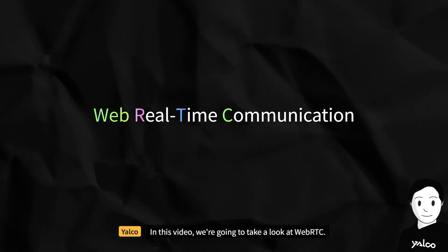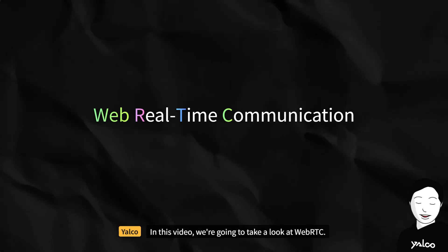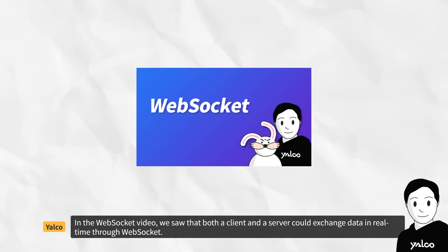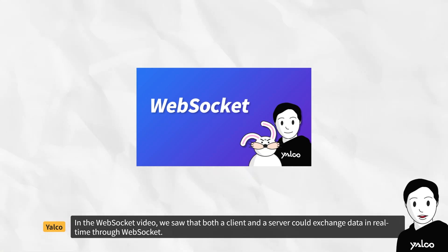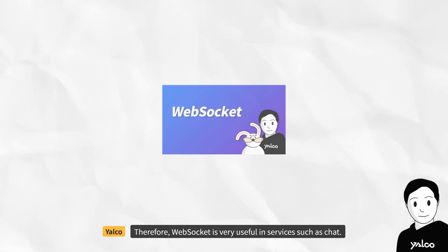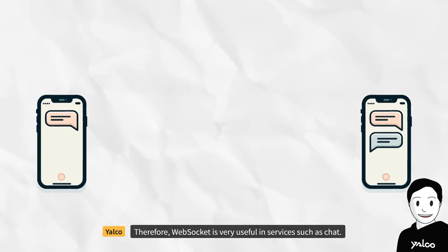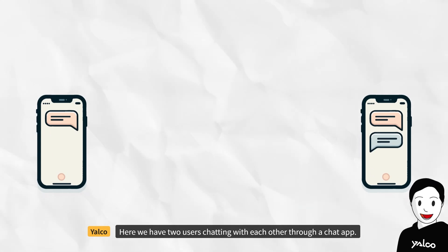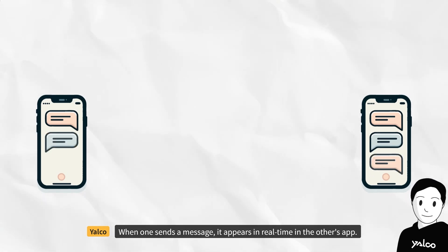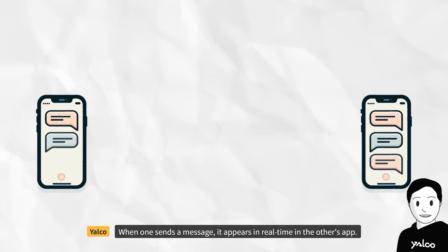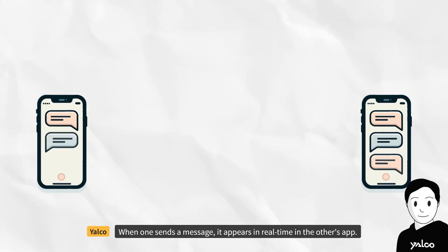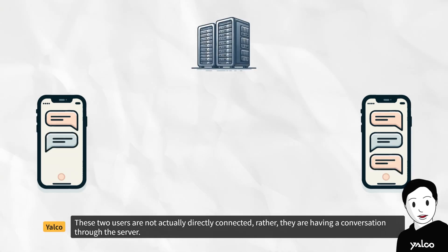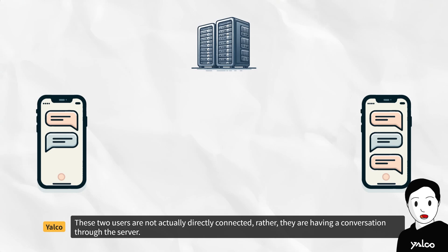In this video, we're going to take a look at WebRTC. In the WebSocket video, we saw that both a client and a server could exchange data in real-time through WebSocket. Therefore, WebSocket is very useful in services such as chat. Here we have two users chatting with each other through a chat app. When one sends a message, it appears in real-time in the other's app. These two users are not actually directly connected — rather, they are having a conversation through the server.